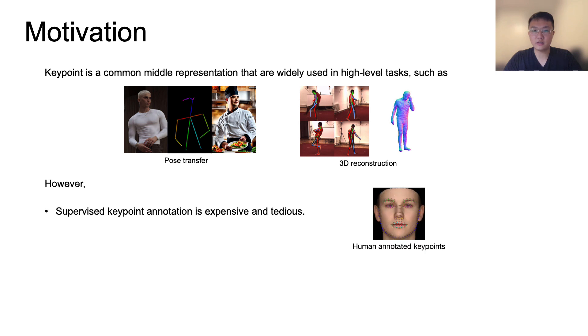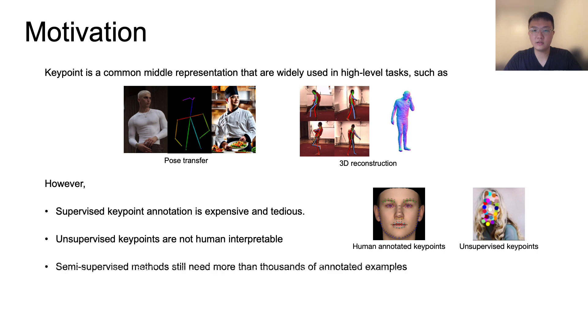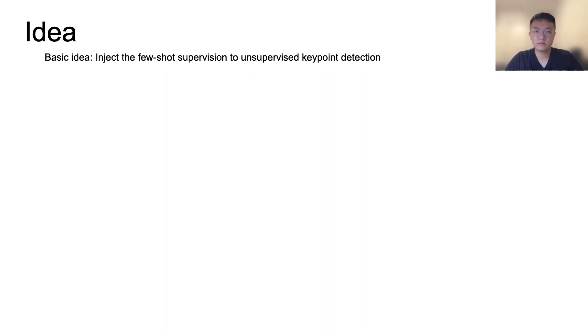However, supervised keypoint annotation is expensive and tedious. Unsupervised keypoints are not human interpretable. Semi-supervised methods still need thousands of annotated examples. Existing few-shot methods only work on specific areas such as faces and x-rays. Our basic idea is to inject few-shot supervision into unsupervised keypoint detection.